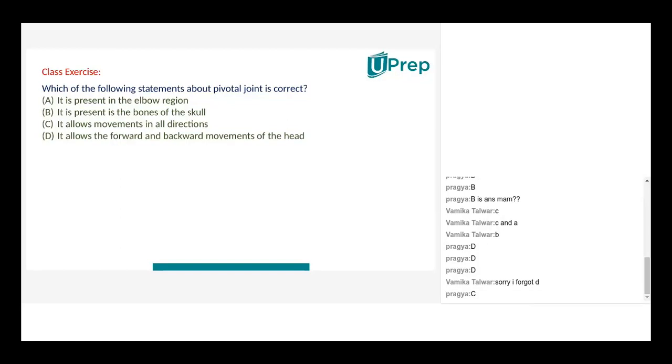Yashika, take up this question. Nobody is going to answer. Yashika is going to answer. Which of the following statements about the pivot joint is correct? I am sure it is. Does it allow movement in all directions? No. So the answer is B. Pragya, Vamika correct.